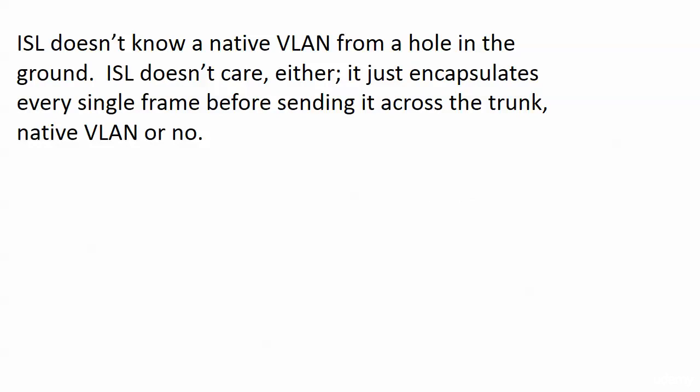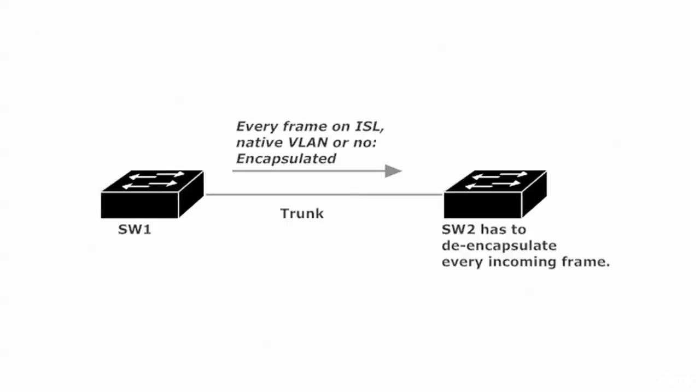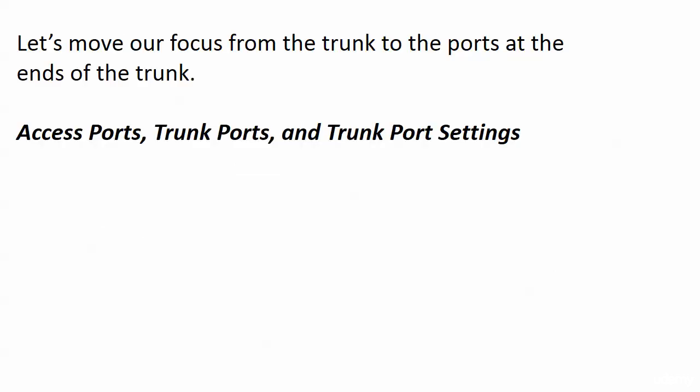ISL doesn't know what a native VLAN is and doesn't care. It just encapsulates every single frame before it's sent across the trunk, whether it's for the native VLAN or not. So ISL is delivering a lot of overhead that we'd rather not have. What we're going to do now is move our focus from the trunk to the ports at the end of the trunk — and that's liable to be a long discussion, so we'll pick up with that at the beginning of the very next video.